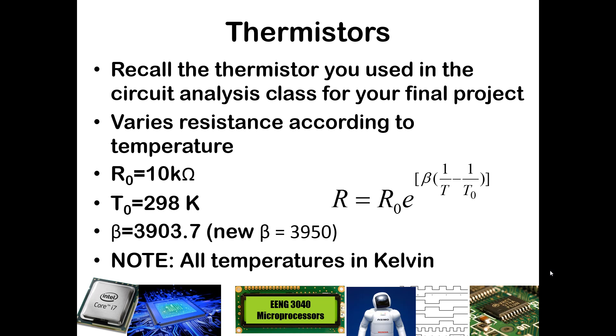For our thermistor, R-naught is 10 kiloohm, T-naught is 298 Kelvin. In the circuit analysis class, you used a different thermistor that had a beta of 3903.7. The thermistor that you have in your possession has a beta of 3950. Make sure if you reference any old notes from circuit analysis as you're working on this lab, that you do use the updated beta value. It is important to note that all of the temperature values in this equation are in Kelvin.